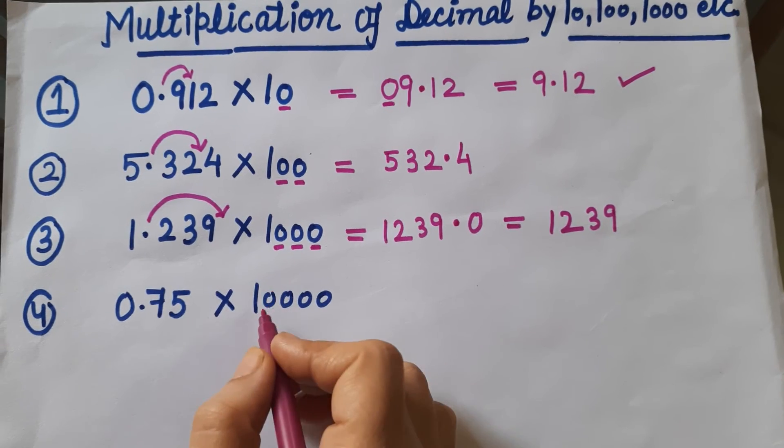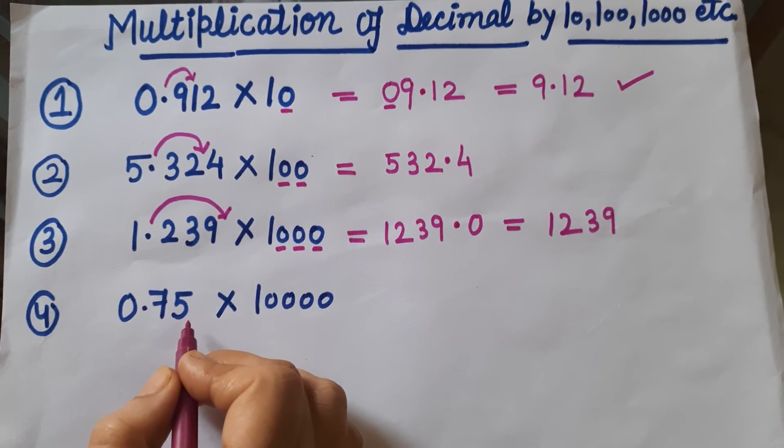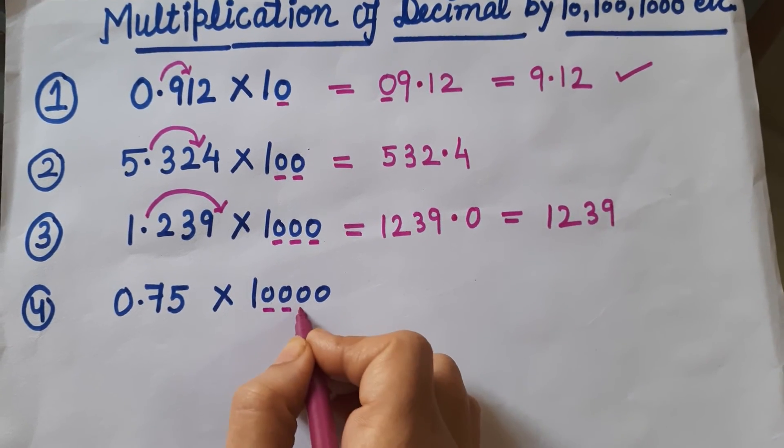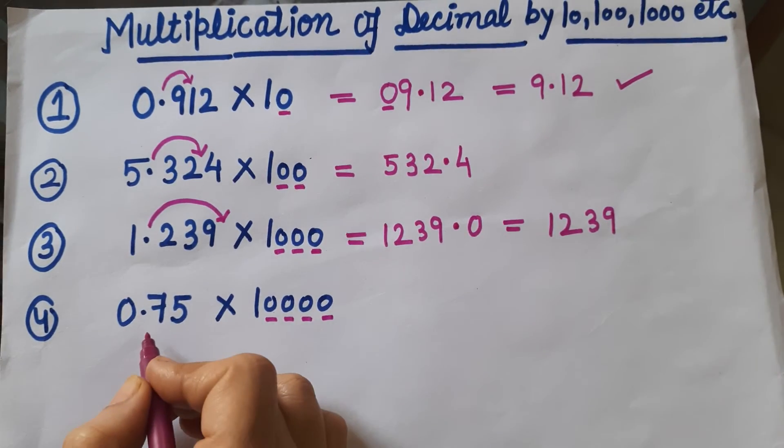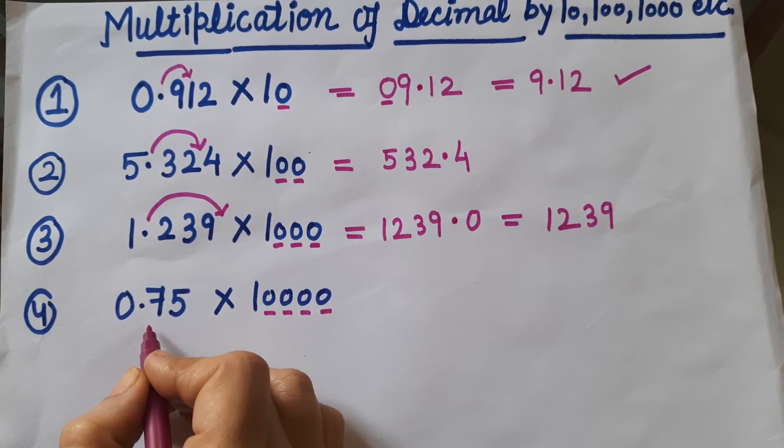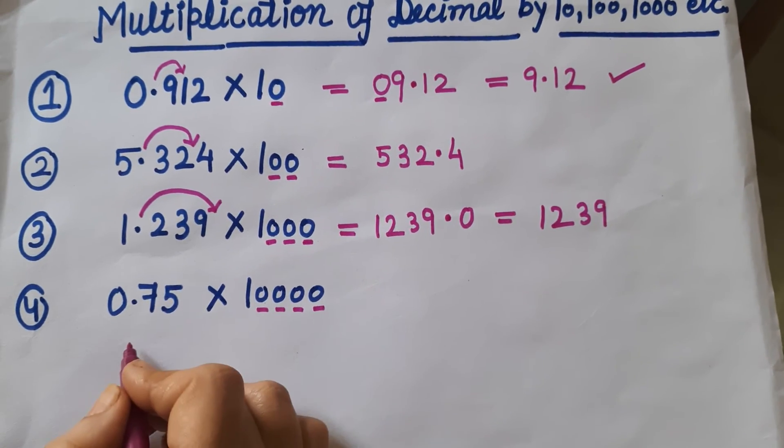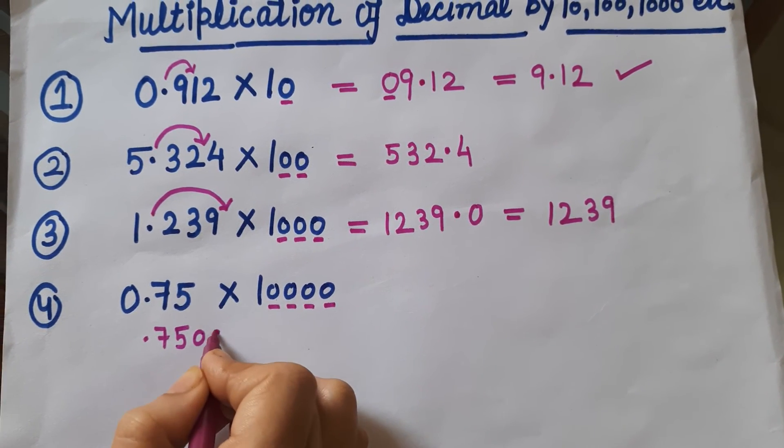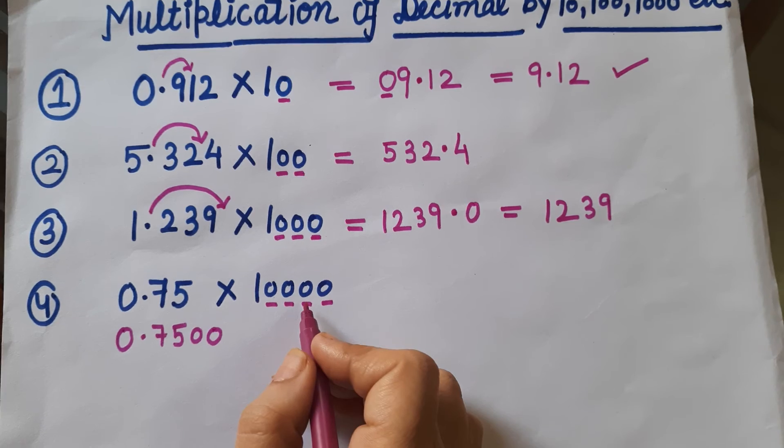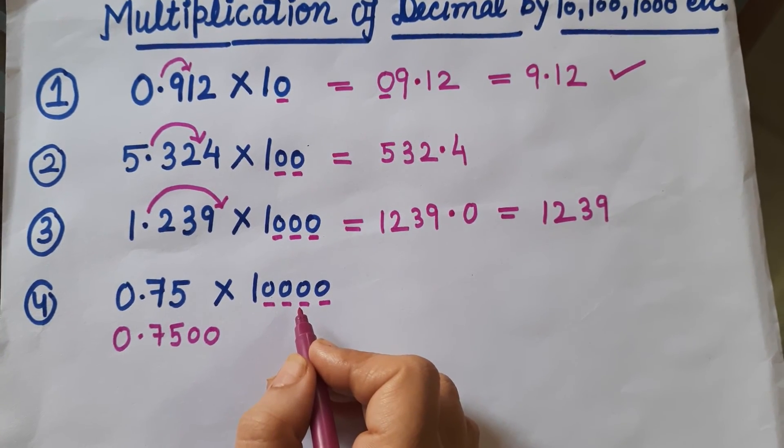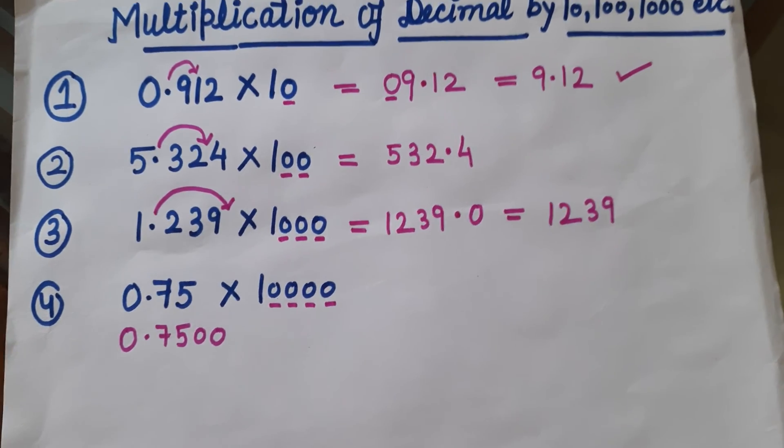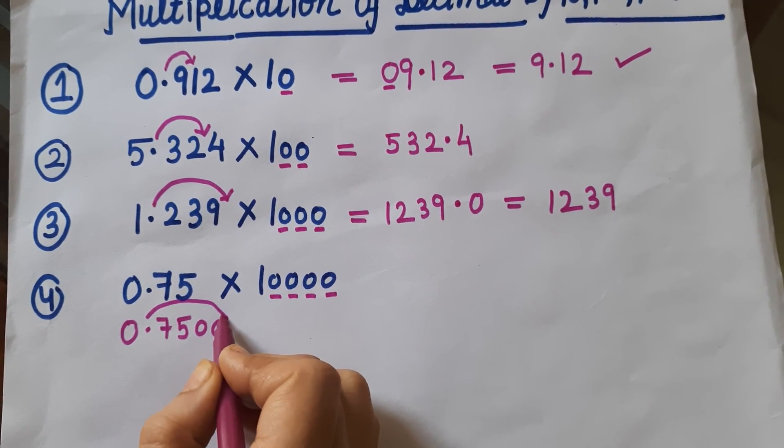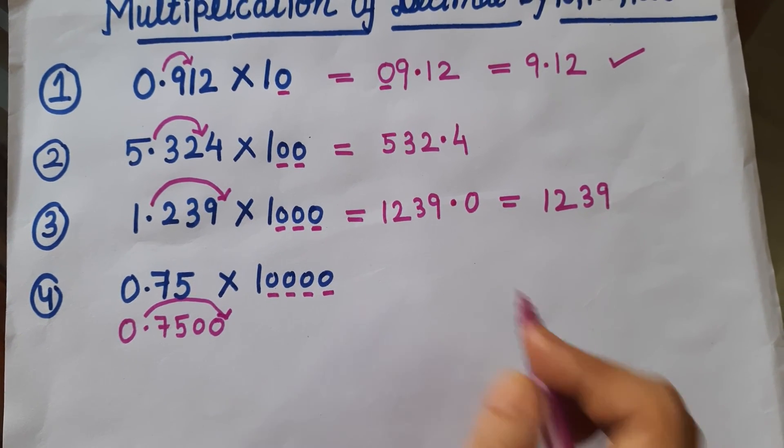Let's move to the next. 0.75 is multiplied by 10,000. Here are 4 zeros, but you can see in the term we have only 2 digits. So what we will do? We will put 2 zeros more because we have to shift the decimal after 4 digits. This decimal will be shifted after 4 digits.